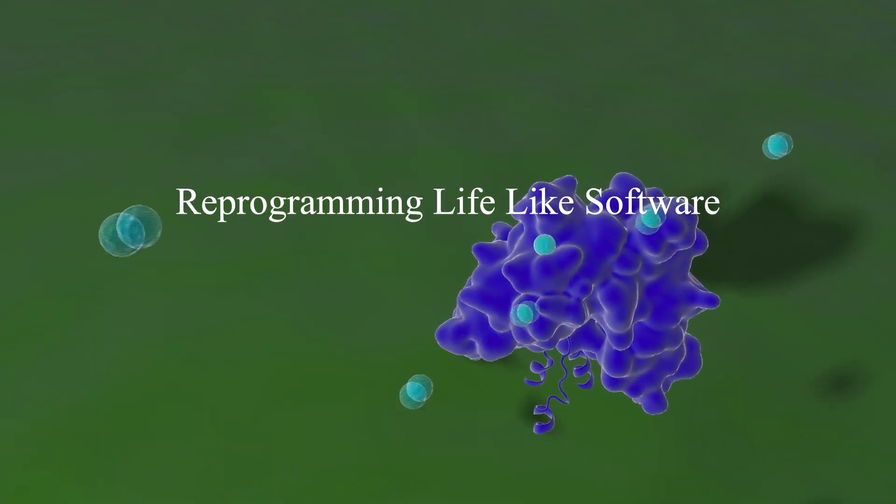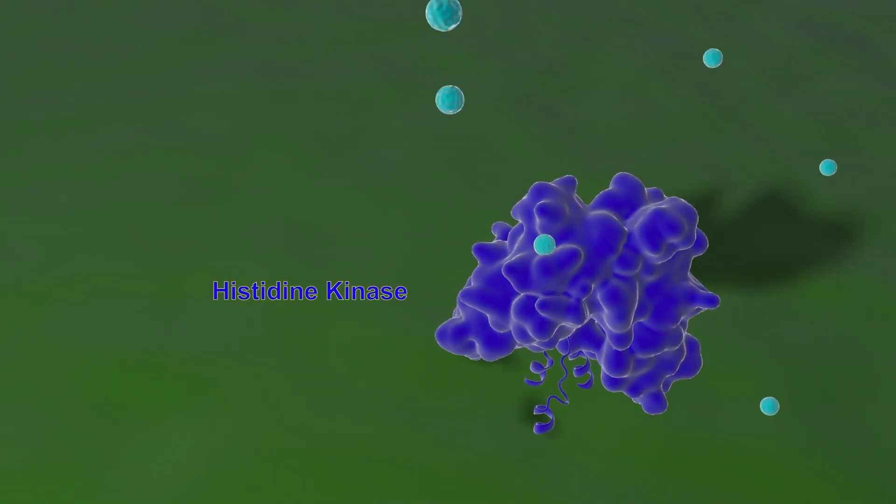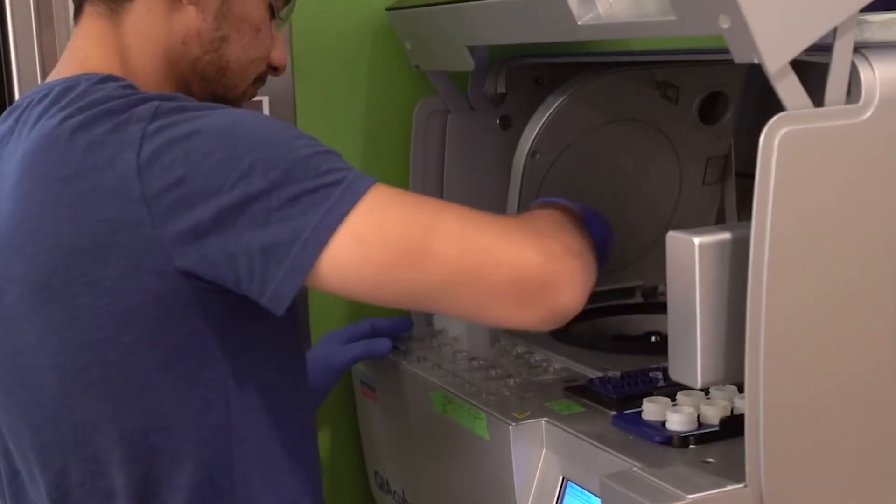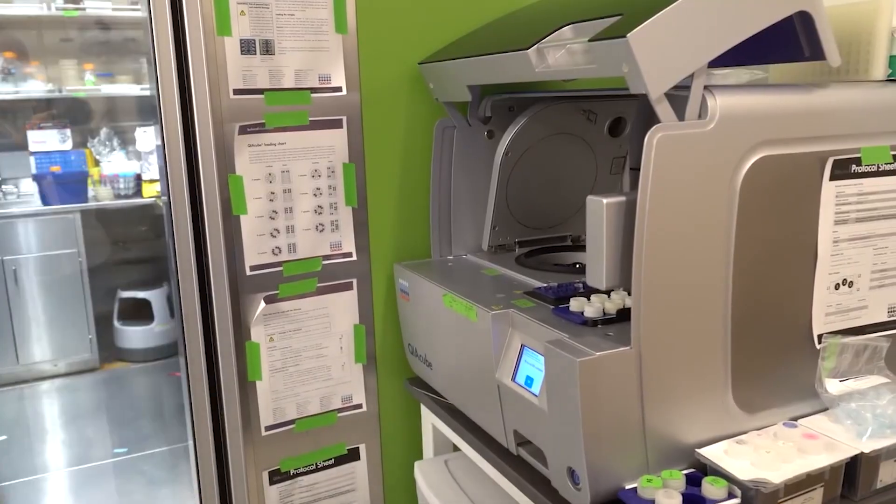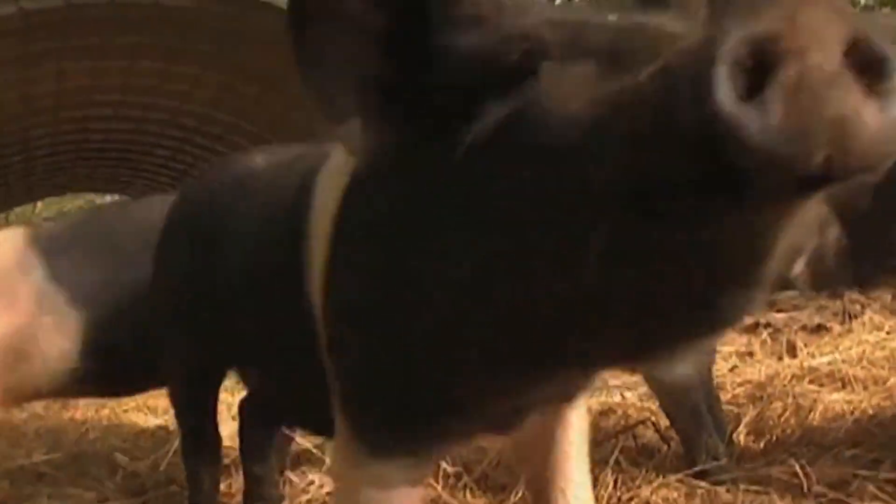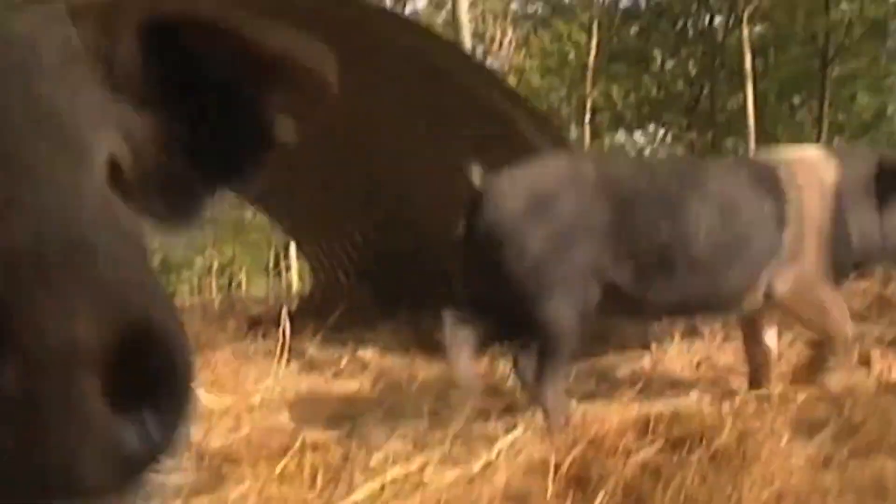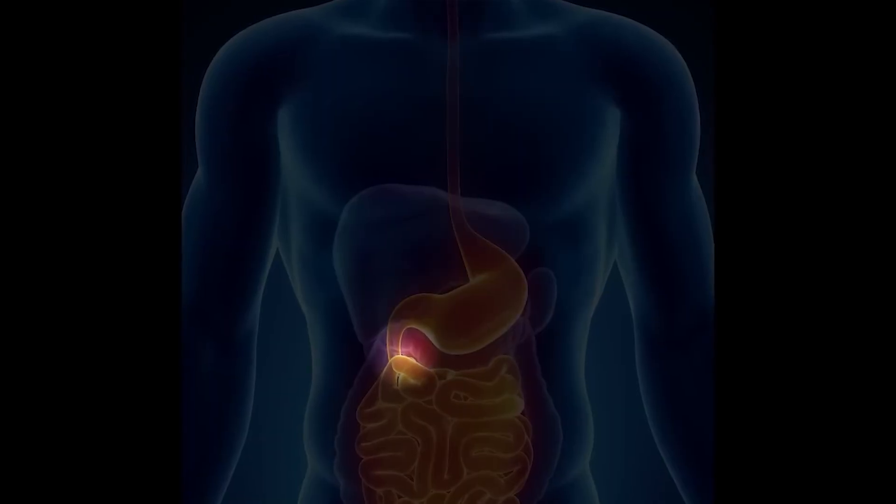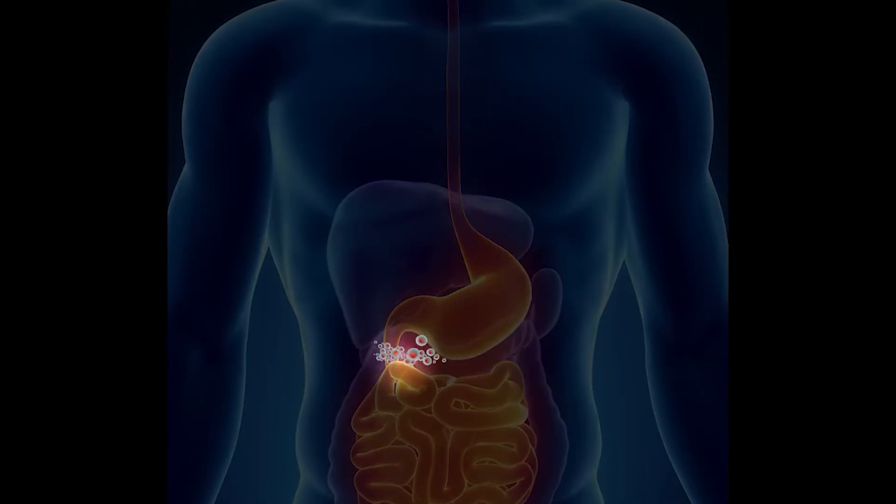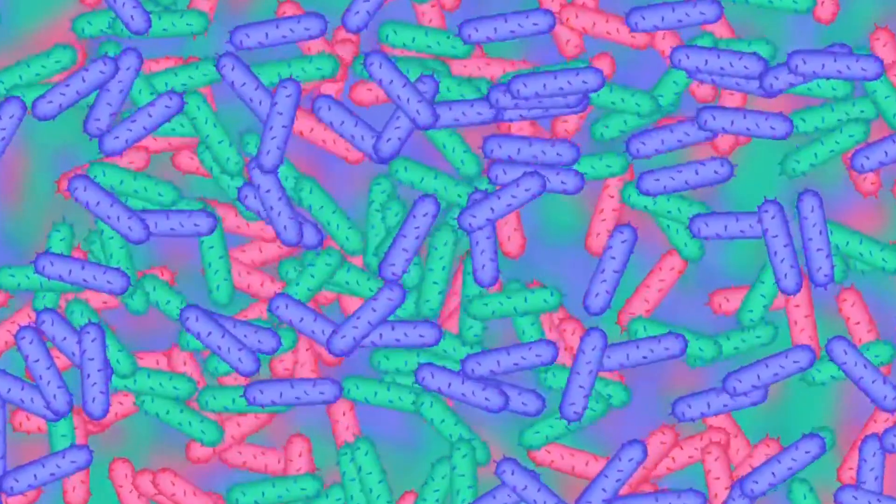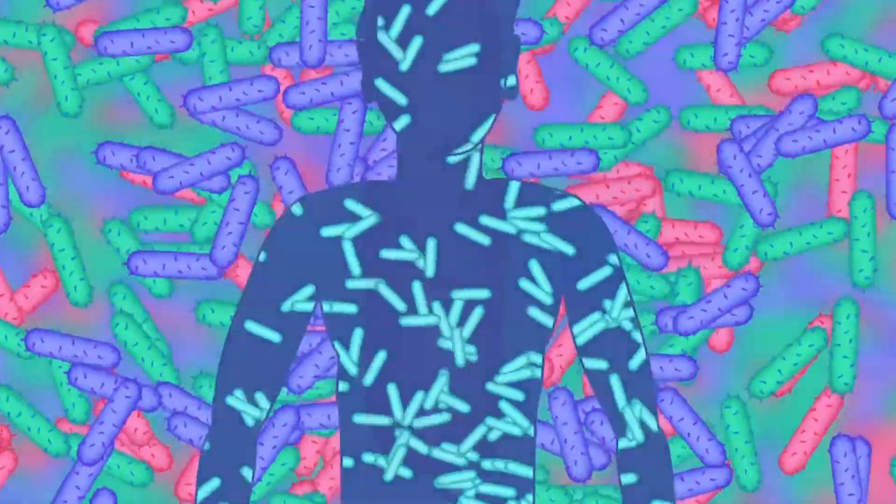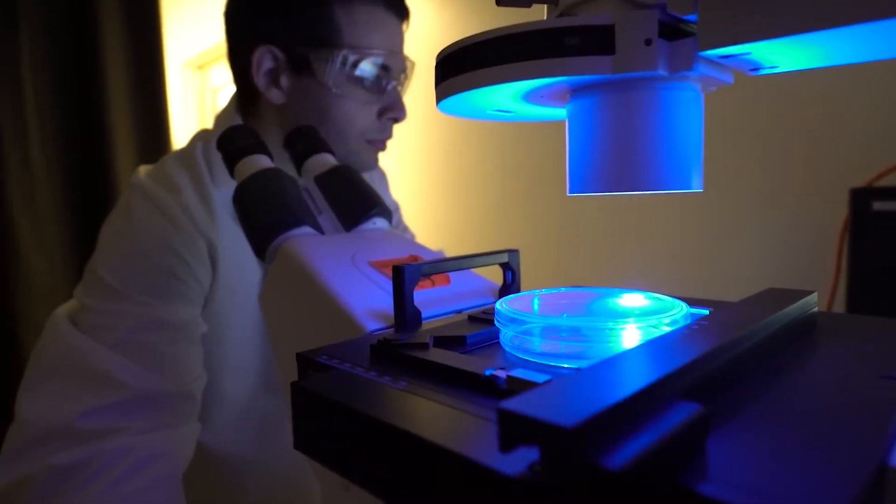Reprogramming life like software. Synthetic biology is treating cellular processes like programmable code that can be rewritten to achieve desired outcomes. In 2025, biotechnology startups are engineering microorganisms to produce fuels, plastics, and novel medicines more sustainably than traditional chemical manufacturing processes. Cultured meat is advancing beyond laboratory curiosities, with pilot production facilities now generating tons of lab-grown chicken and beef using cellular agriculture techniques rather than raising and slaughtering animals.